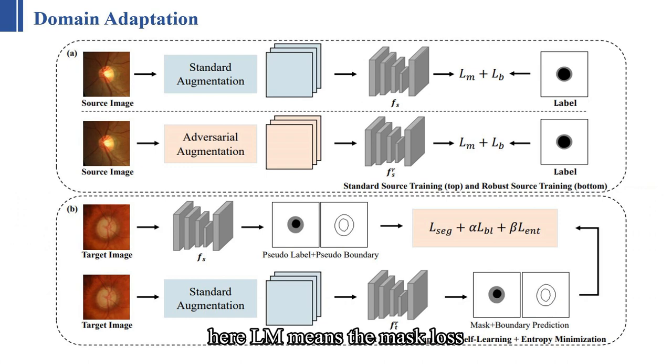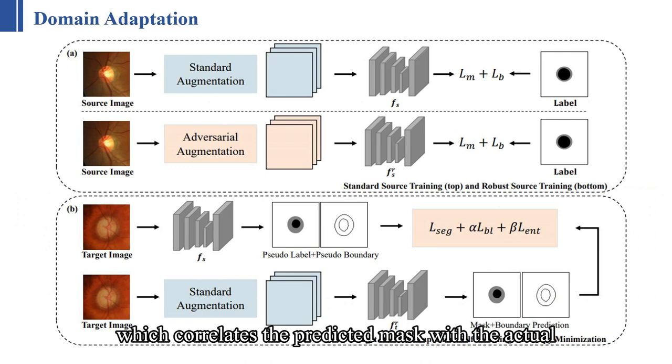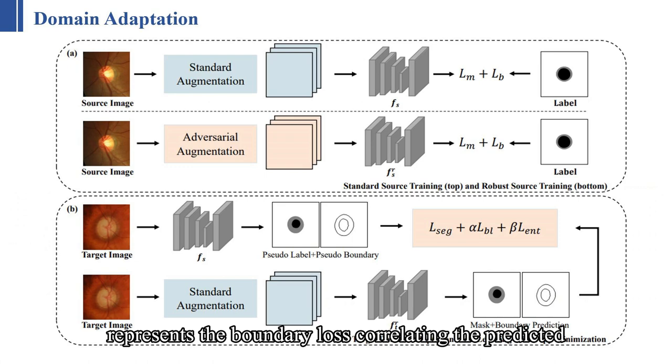Here, Lm means the mask loss, which correlates the predicted mask with the actual ground truth mask, while Lb represents the boundary loss correlating the predicted boundaries with the ground truth boundaries.